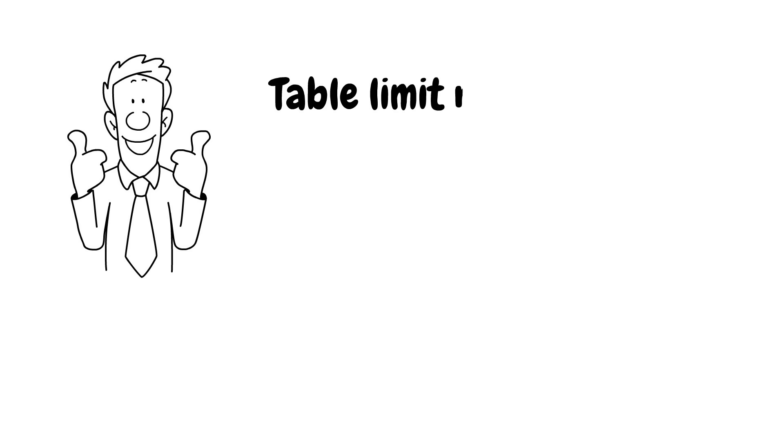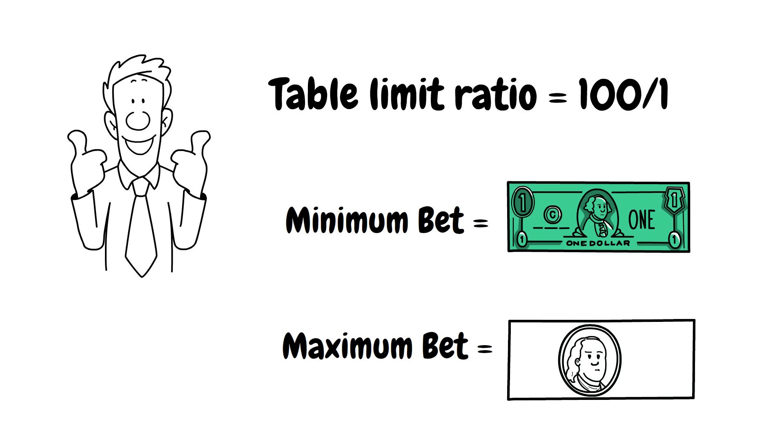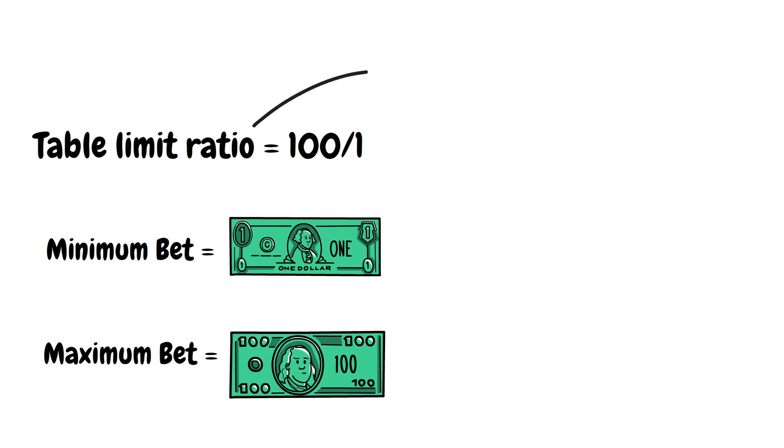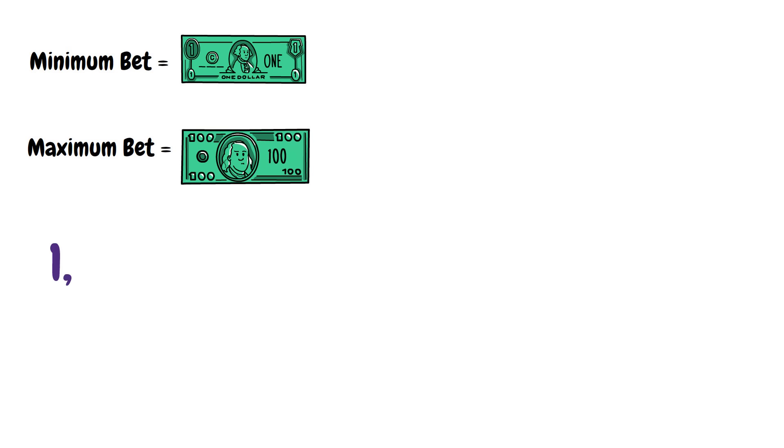Let me show you with an example. I'll assume we are playing at a good roulette table with good table limit ratios of 100 to 1. For example, if the minimum bet is $1 on a straight-up number, then the maximum bet is $100. Casinos will have different ratios, and as a generalization, a table with bigger ratios are better to play on. But let's stick with this 100 to 1 table limit ratio for our example.